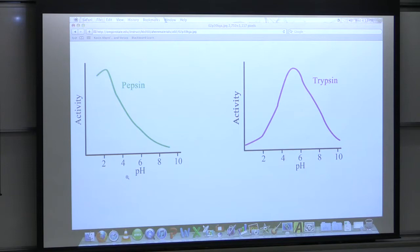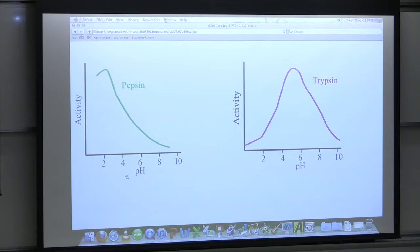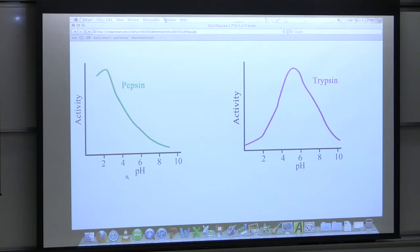pH is important because it really does affect a protein. The reason it affects a protein is because it changes the charges within a protein due to the ionization I've described. We see two very different proteins on these graphs — let me explain them.